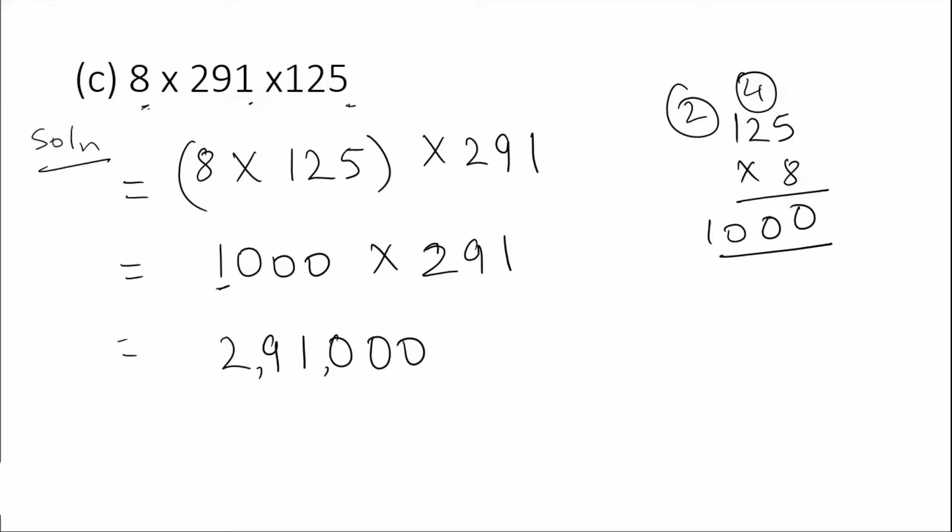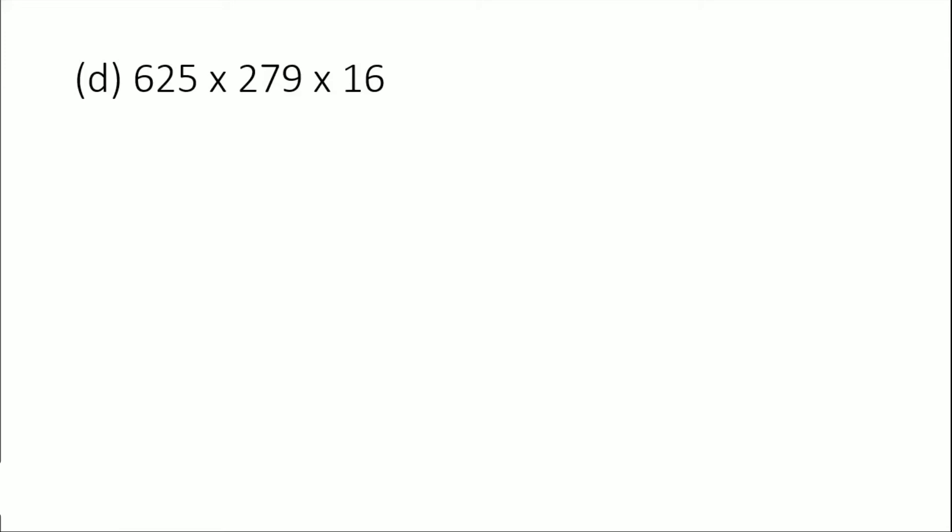Next question is 625 times 279 times 16. Which two digits would give me 0? 5 and 9 is 45, 5 times 6 is 30. We always see the ones digit. So 625 times 16 times 279. We need to multiply 625 by 16.